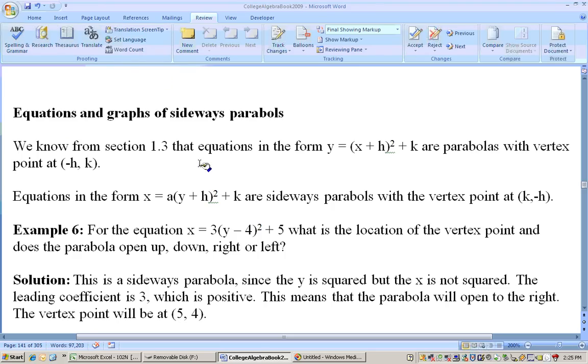Okay, so we know from section 1-3 that equations in the form y = (x + h)² + k are parabolas with vertex points at (-h, k). That's back on section 1-3. Then equations in the form x = a(y + h)² + k are sideways parabolas with the vertex point at (k, -h). Look at where the vertex point is when it's solved for y and the x is squared. It's at (-h, k), and when it's solved for x and the y part is squared, it's at the point (k, -h).